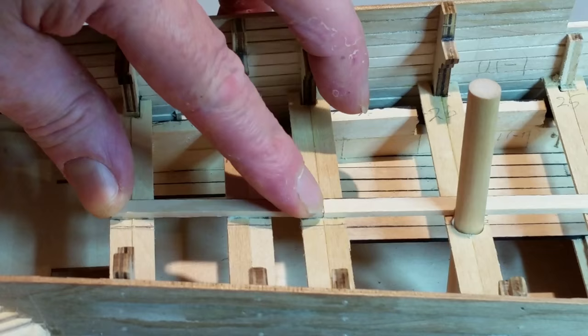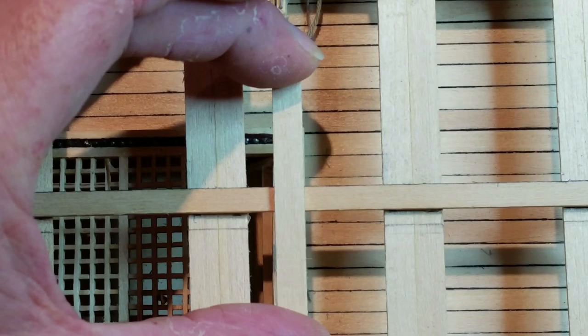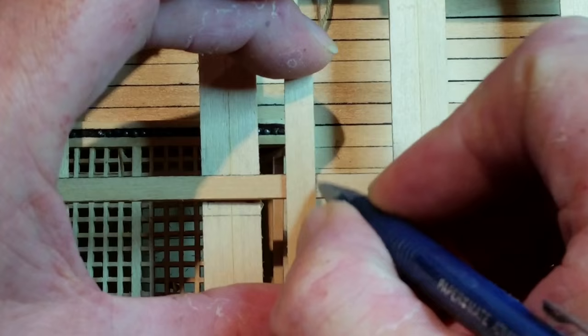Now you need to mark the positions of the openings in this deck. Make a pencil mark directly over the front of the grating on the third deck. Make a second mark directly over the bits.